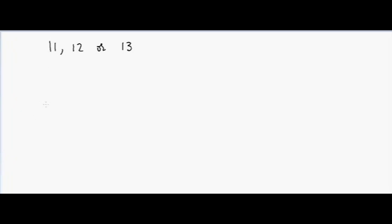We'll multiply large numbers by 11, 12, or even 13 without using a calculator, in the mind. Let me begin with an example. Suppose I have 1, 2, and 3 and I want to multiply by 11. First I'll take the last digit, then I'll say 1 here and 3 here, and then I'll add 1 and 2 together — that's 3 — and add 2 and 3 together — that's 5. So my answer will be 1353.